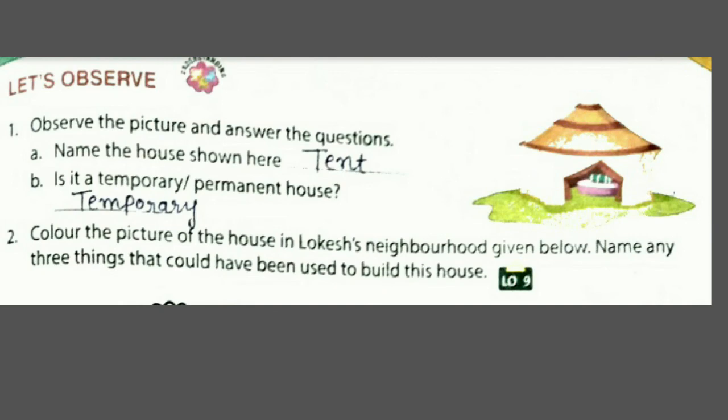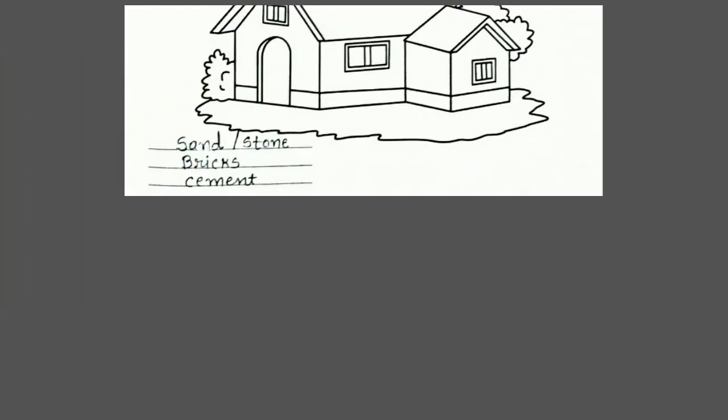Then 'Let's Observe' — right side पे जो picture है उसे observe करना है. First: name the house shown — वो है tent, तो हमें लिखना है tent. Second: is it a temporary or permanent house? Tent temporary house है, तो answer is temporary.